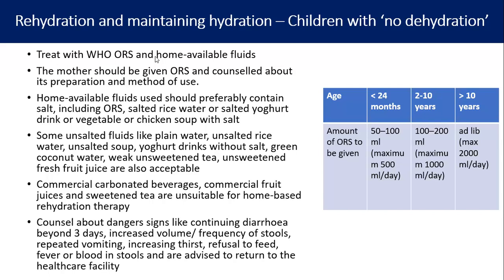For children less than 24 months, ORS is 50–100 ml, maximum 500 ml per day. For 2–10 years, it is 100–200 ml, maximum 1000 ml per day. For children more than 10 years, 200–2000 ml per day. Children with some dehydration should be treated in a hospital with prompt ORS. All children with severe dehydration should be urgently referred for IV fluid replacement.